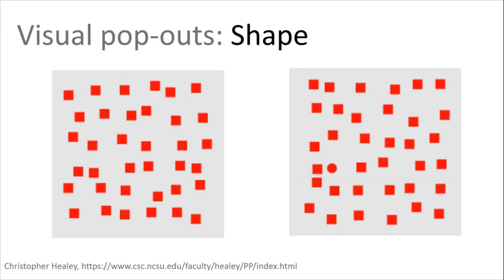Shape is another visual property we can use to encode differences in data. Here, the visual system identifies the target through a difference in curvature, right?